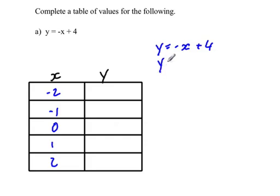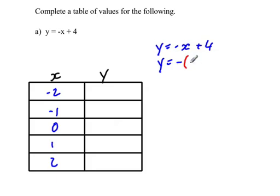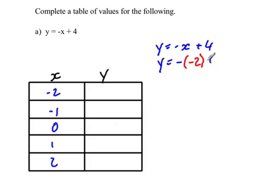So this is going to be y equals negative, and we're going to sub in negative 2 for x. This is understood to be negative 1 times negative 2. Negative times a negative is a positive, so this is 2 plus 4, which is 6.